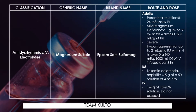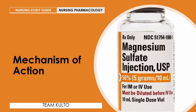Now, in terms of route and dose, for adults for parenteral nutrition: 8 to 24 mEq per day IV. For mild magnesium deficiency: 1 gram IM or IV every 6 hours for 4 doses, or 32.5 mEq per 24 hours. For severe hypomagnesemia, up to 2 mEq per kilogram IM within 4 hours — over 5 grams, that is 40 mEq per 1,000 mL D5 water, IV infused over 3 hours. For IM for toxemia or eclampsia nephritis — one of its indications — 4.5 grams of 50% solution every 4 hours as needed. For IV: 1 to 4 grams of 10 to 20% solution; do not exceed. We'll discuss the indications shortly.